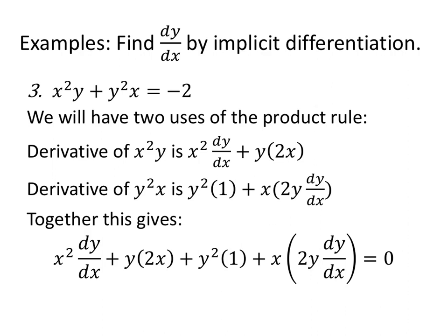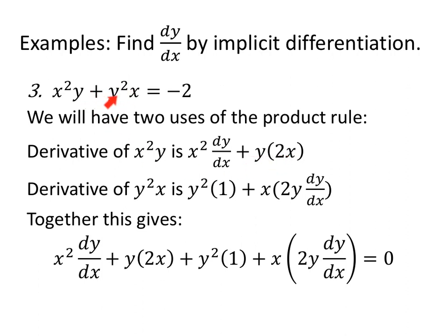Now let's make it harder: x squared y plus y squared x equals negative 2, and we want to find dy/dx by implicit differentiation. We're going to use the product rule twice. For x squared times y: x squared dy/dx plus y times 2x — first times derivative of the second, plus second times derivative of the first.